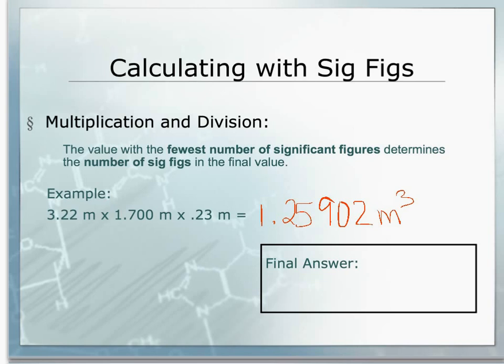This is our calculator answer. But because we are multiplying measurements we need to account for significant figures. Looking at our three measurements, we need to determine the number of sig figs. In our first value we have three, in our second value we have four, and in our third value we have two. The smallest here is two, so our answer can only have two sig figs.